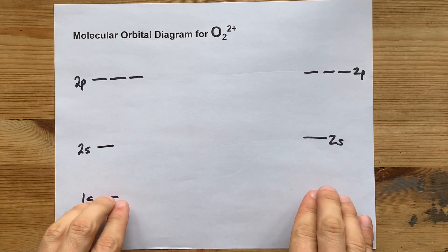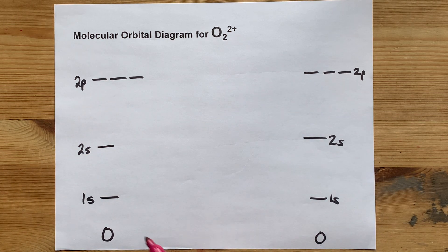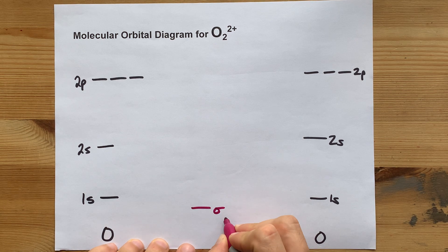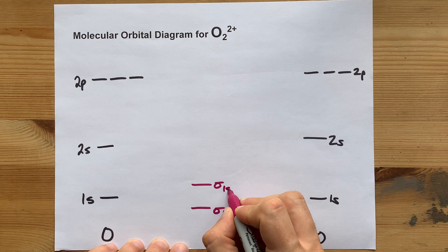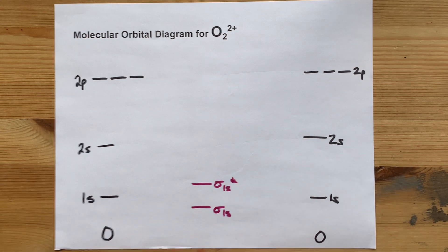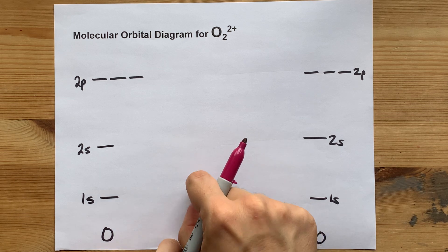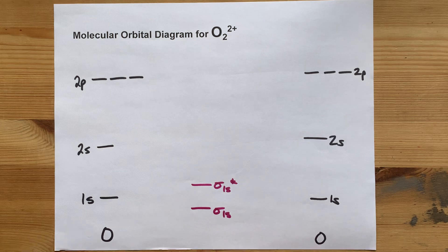Now, you can actually ignore the 1s. It's an inner shell here. But if you wanted to draw it, the 1s's would overlap, and you would get a sigma 1s bonding orbital and a sigma 1s antibonding orbital. The average height of these two lines should be the same as the average height of these two lines. You're not creating any energy here.